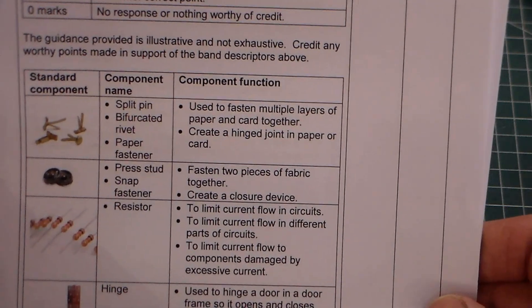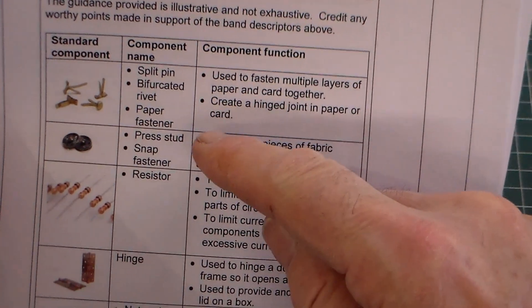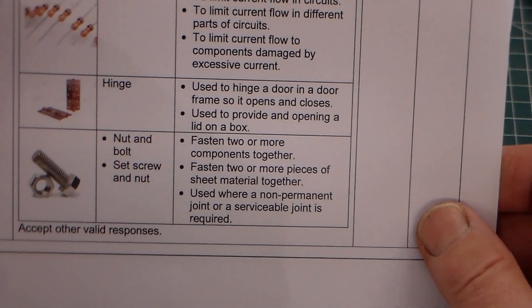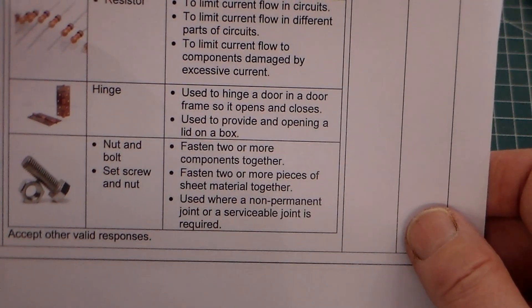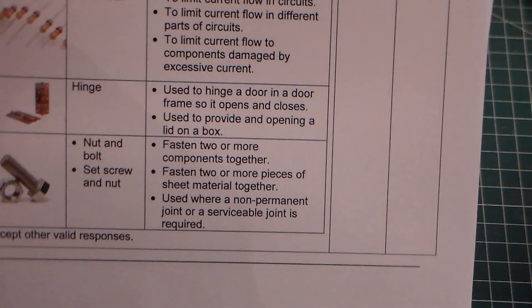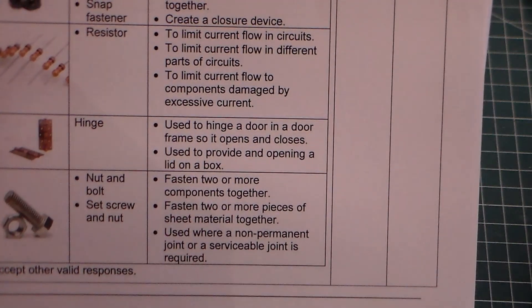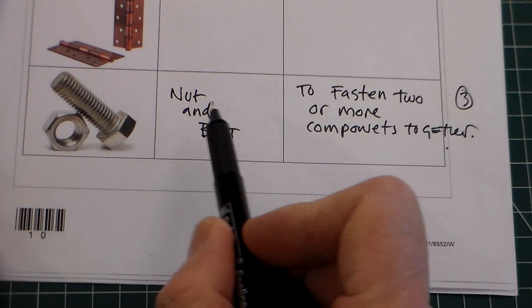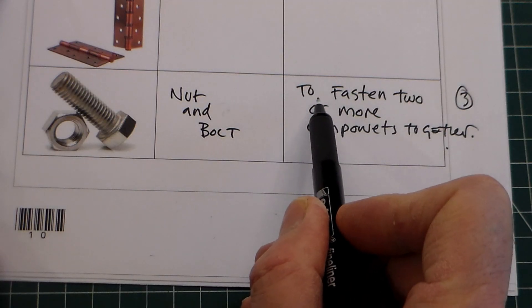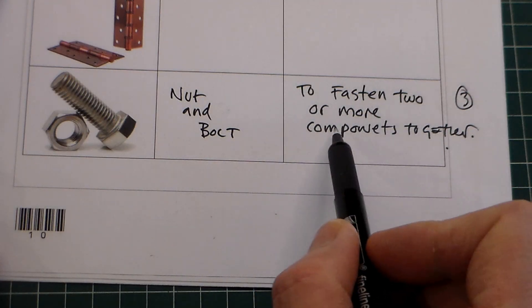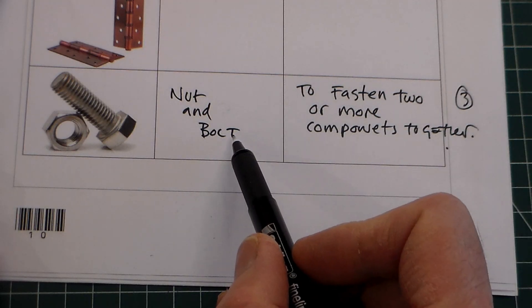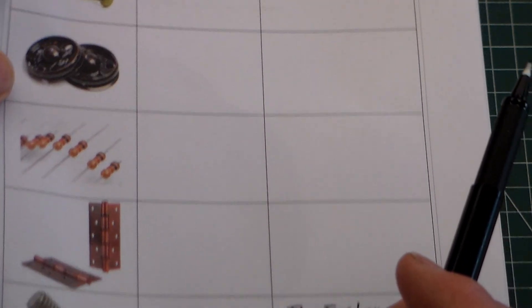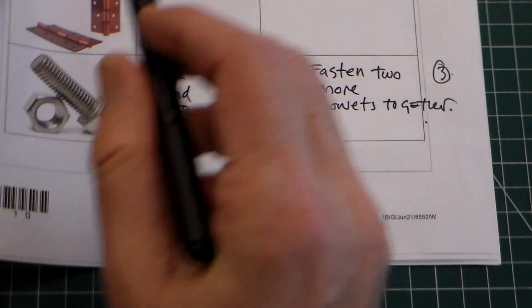The mark scheme gives examples: split pin, press stud, resistor, hinge, and nut and bolt (or set screw and nut). For question 16-1, the answer is nut and bolt, and the component function is to fasten two or more components together — that gives you three marks. You're not required to fill in any of the others, so just pick one of those to fill in.